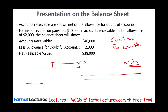There are two primary methods for making this estimate under the allowance method. We could use the percentage of sales — that's one method. Or we could use the accounts receivable method, which includes the percentage of receivable or aging of receivable. The percentage of sales is a simple one-step method, while the accounts receivable method is a two-step process.